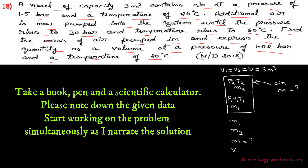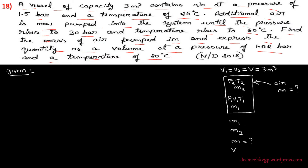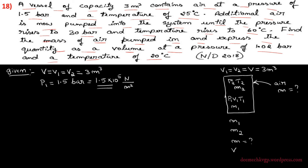Let me write down the given data. Vessel capacity: V = V1 = V2 = 3 cubic meters (constant volume vessel). Initial pressure P1 = 1.5 bar = 1.5 × 10⁵ N/m² (since 1 bar = 10⁵ N/m²). Initial temperature T1 = 25°C = 25 + 273 = 298 Kelvin.